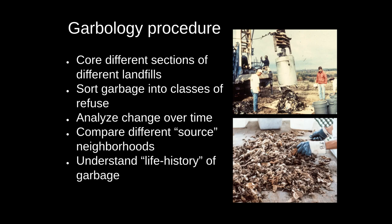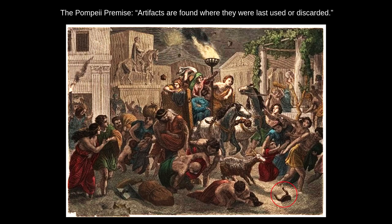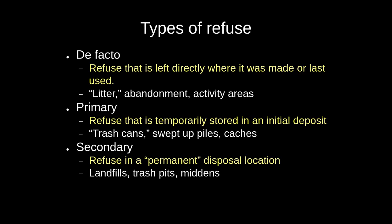Through garbology and the work of other archaeologists, we have worked to dispel the insipid understanding that has followed archaeology for years and years — the Pompeii premise we talked about before: the untrue idea that artifacts are found where they were last used or discarded. We know that is almost always not the case. Instead, we have built a more nuanced understanding of the context of refuse disposal, and we have a three-tiered system of understanding the types of refuse.